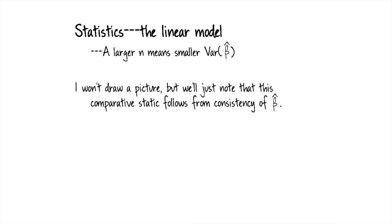A larger n means a smaller variance of β̂. Well, I don't need to draw a picture of this. We'll just note that this follows from the fact that β̂ are consistent estimators.